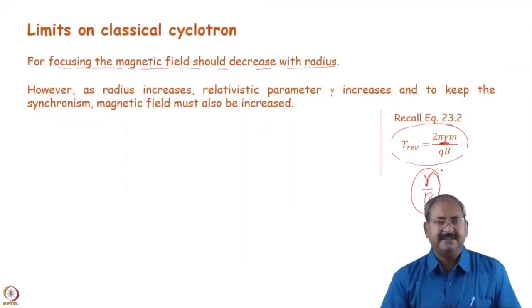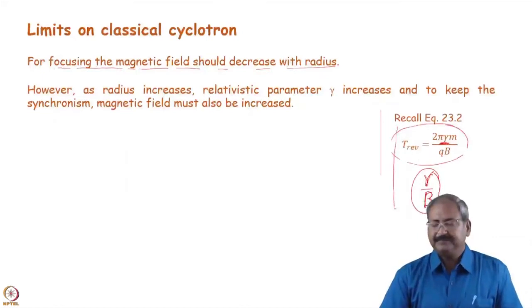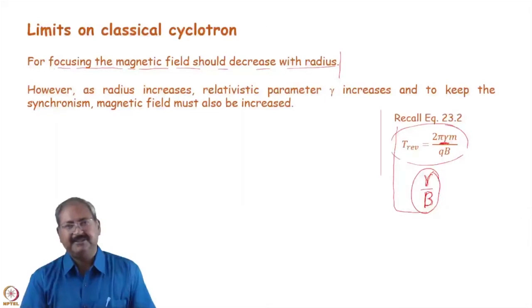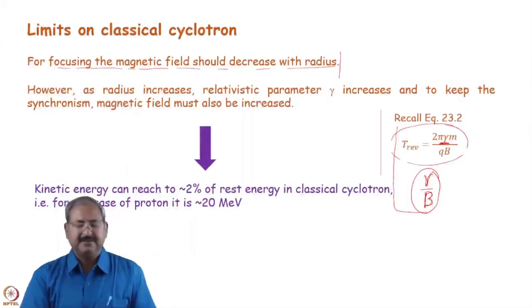And as gamma increases, particle goes to outer orbit, means orbit with larger radius. So, magnetic field should increase with radius. So, for synchronism, we have to have a magnetic field which increases with radius. While for focusing, we should have a magnetic field which should decrease with radius. So, these are contrary requirements for running a cyclotron.